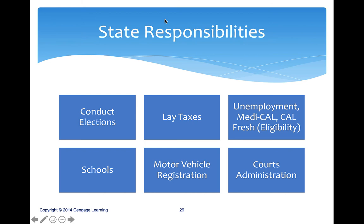Cal Fresh, more commonly known as food stamps or EBT, also uses federal dollars — you go to the county and apply, and it's run through the state. Local governments also run schools, motor vehicle registration, and the courts. We have two clearly defined court systems: the federal court system and the state court system, which we'll discuss more later in the class.